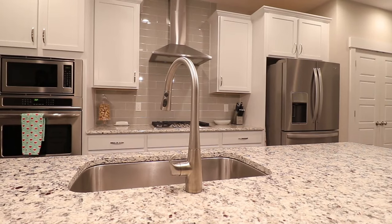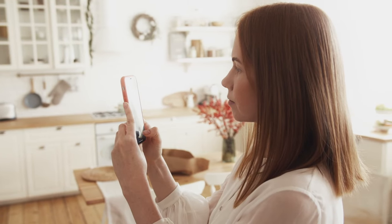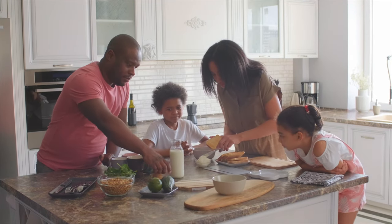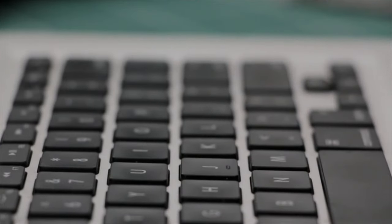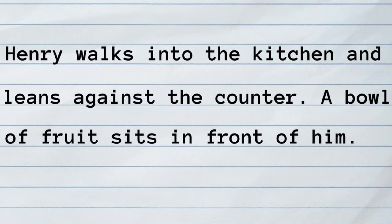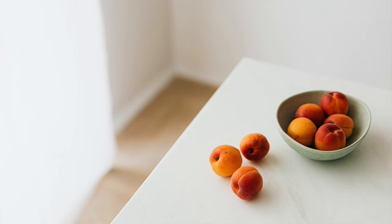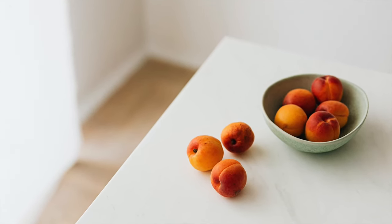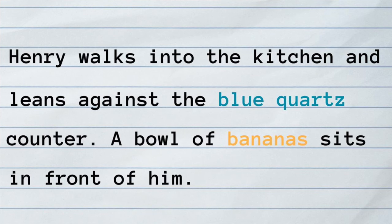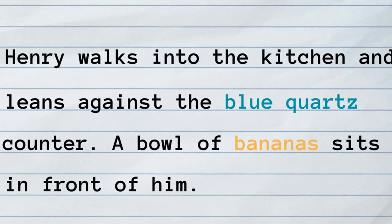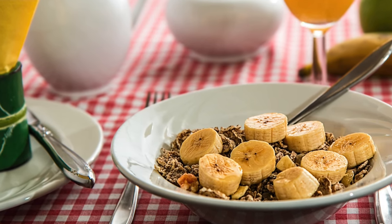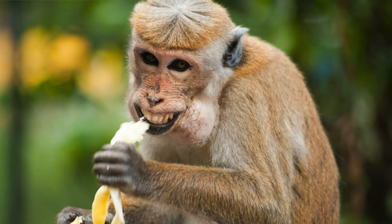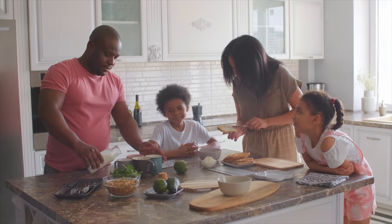Let's say you're writing a scene that takes place in a kitchen. You write the scene as you see it in your head, perhaps focusing on dialogue rather than setting, since you assume everyone can imagine what a kitchen looks like. Maybe you simply say, Henry walks into the kitchen and leans against the counter. A bowl of fruit sits in front of him. That's a pretty sparse description. So you might change it to say he leans against the blue quartz counter and a bowl of bananas sits in front of him. But is that actually better? It's more specific, but it doesn't tell us anything about the characters, conflict, or world of the story. The story would be no different if those details were not included.